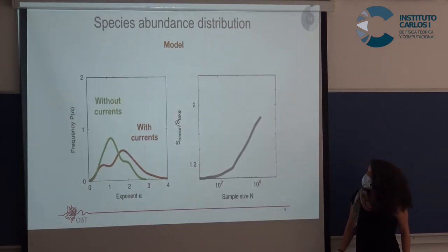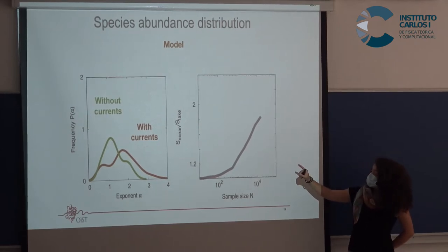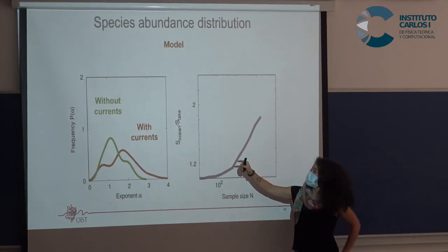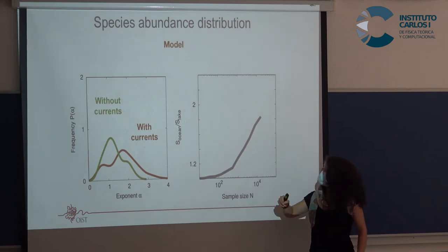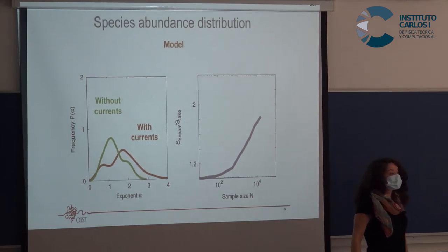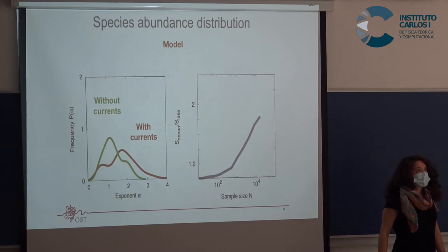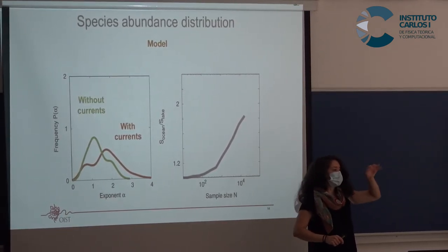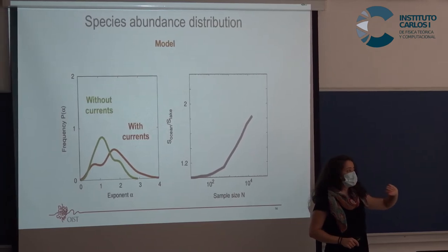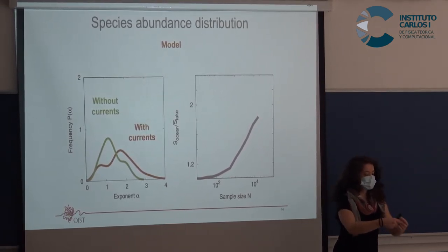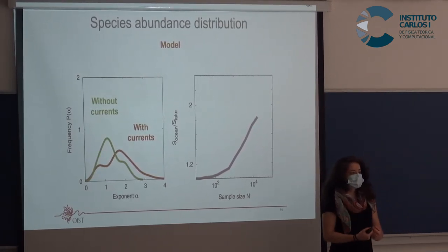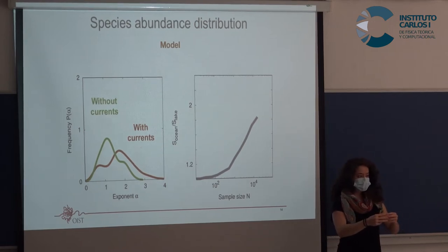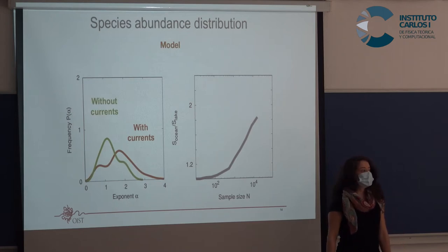We also measured another diversity pattern: the number of species compared between ocean samples (with currents) and lake samples (without currents), over different parameters. One run corresponds to flux parameters that make the jets longer or different in some way. We see that for currents, the number of species is higher than for lakes, and it grows with sample size in a characteristic way.